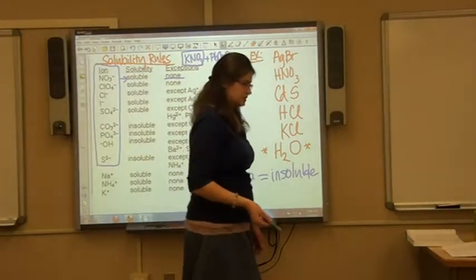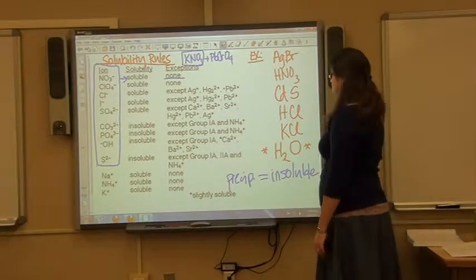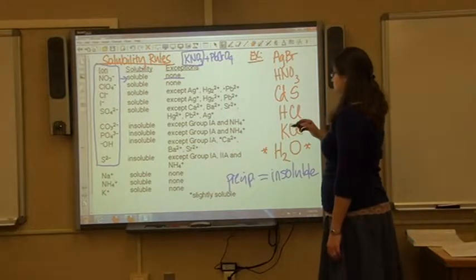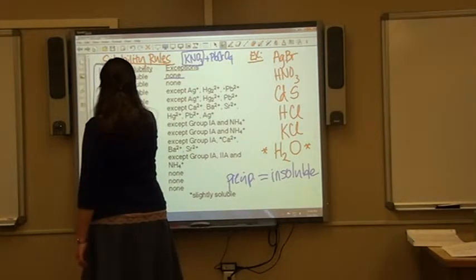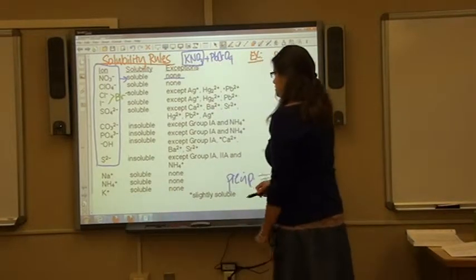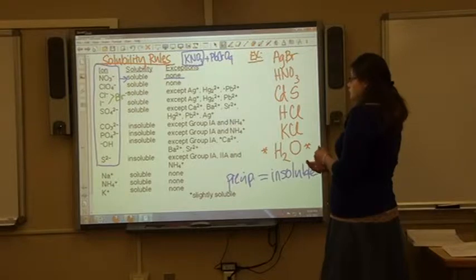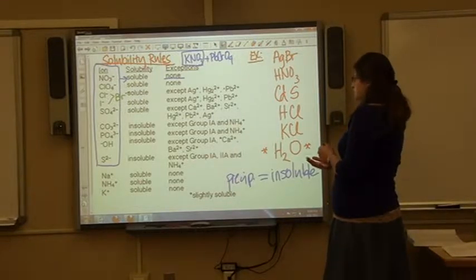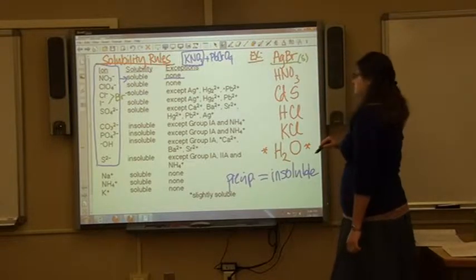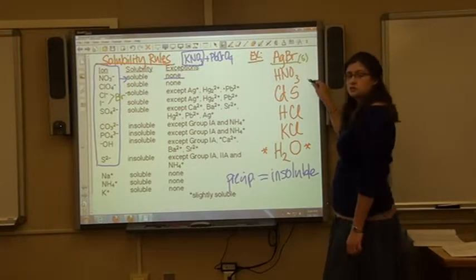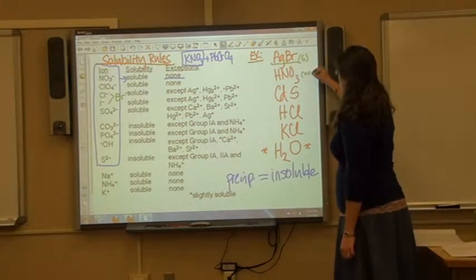Now let's talk more about predicting the precipitate. I've made a list of all the products from those three previous examples. Bromine behaves the same as chlorine and iodine on the chart. All bromides are soluble except when bonded with silver, Hg2(2+), and lead(2+) — so silver bromide is insoluble. For HNO3, all NO3 compounds are soluble, so we write (aq).